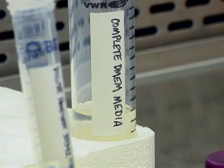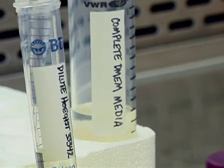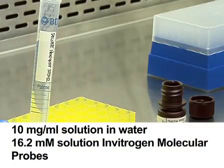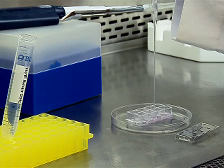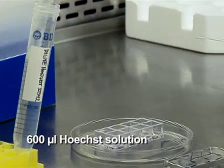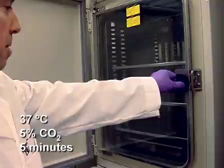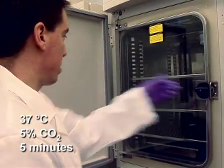While the samples are incubating, prepare Hoechst solution for nuclear staining of samples. Mix 1 microliter of Hoechst 33342 trihydrochloride trihydrate in 10 milliliters of complete DMEM. When the incubation is complete, remove the dilabeling media from all samples and add 600 microliters of the dilute Hoechst solution to each sample. Incubate samples at 37 degrees Celsius, 5% carbon dioxide, for 5 minutes.